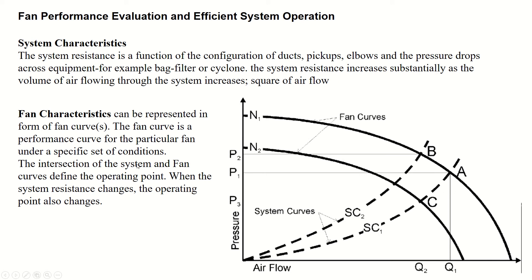The intersection of fan curves and system curves defines the operating point. When the system resistance changes, the operating point also changes. In this figure, the system curves are shown by dashed lines and the fan curves by solid lines. The intersection points of these curves are the operating points at which the fan will be operated.